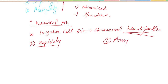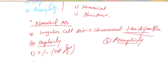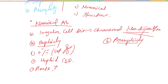In euploidy, there is addition or deletion of a set of chromosomes. For example, it can be haploid, monoploid, triploid, or tetraploid. Euploidy is very common in plants but is totally absent in human beings.